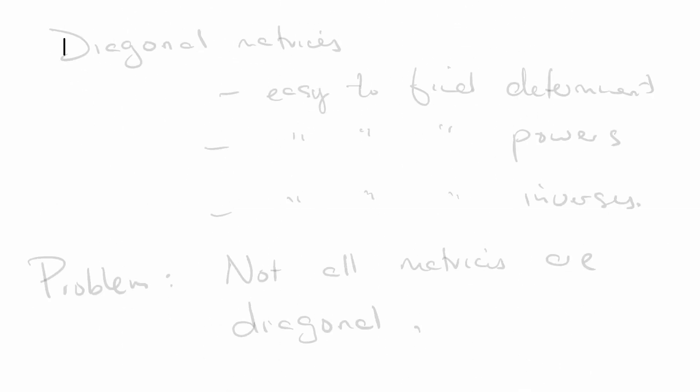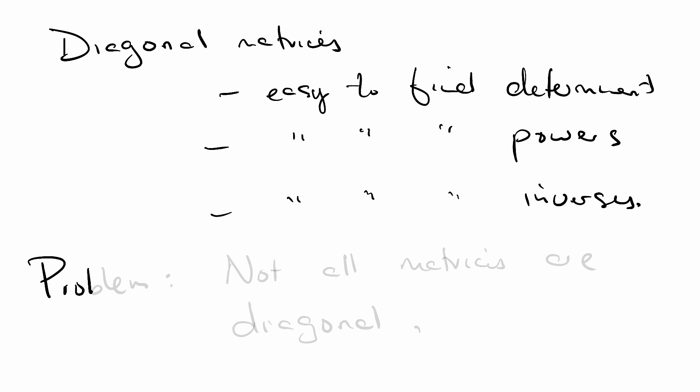Okay. So to summarize, diagonal matrices: easy to find the determinant, easy to find powers, and it's easy to find inverses. The problem that we have, of course, is that not all matrices are diagonal. Over the next few videos, we're going to be talking about how to diagonalize a matrix.